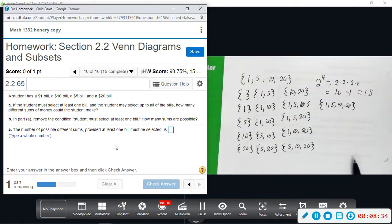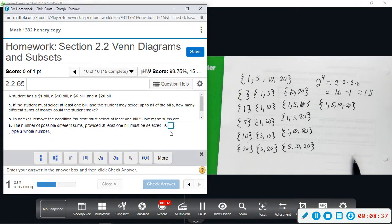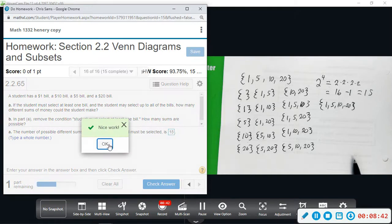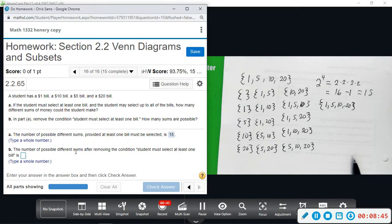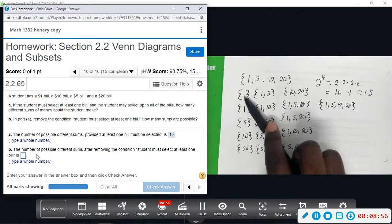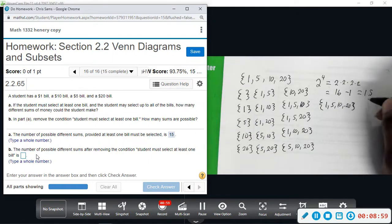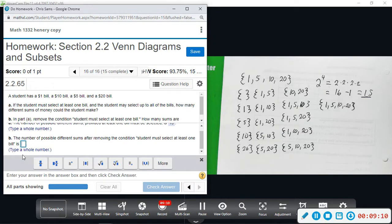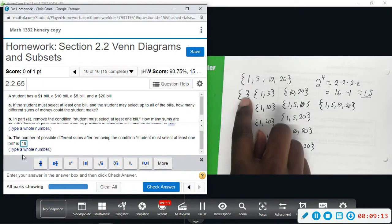So for number one, the number of different sums will be 15. It will be 15 different amounts of money that we could come up with. And then, the number of possible different sums after removing the condition the student must select at least one bill. So now we're getting rid of the case that he has to select at least one bill. So that means it's possible for him to choose none. So we're going to add this one back in. So we'll end up with 16. So it's the same as choosing the number of subsets and the number of proper subsets. So now we're at 16. We have the possibility to choose nothing.